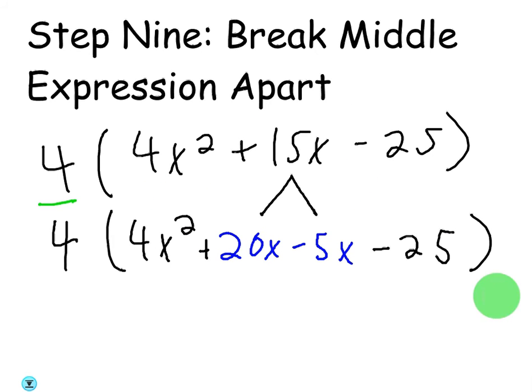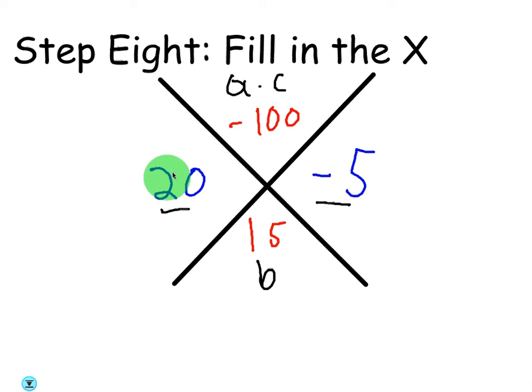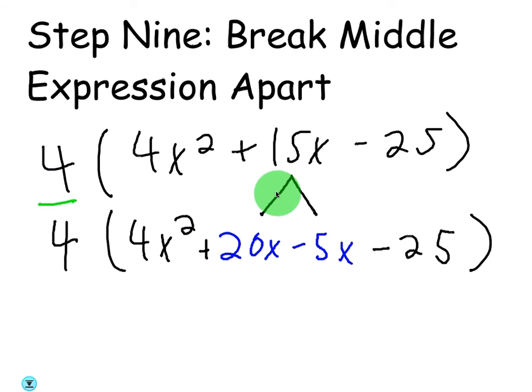All right, 20 times negative 5 is negative 100. 20 plus negative 5 is 15. So we're going to break the middle expression apart based on those two numbers we got. All right, I guess here's how you know. Can everybody see that 20x and 4x squared have a common factor in 4x? If I were to put the minus 5x first, 4 and negative 5 do not have a common factor. So try to put the term next to the first term so that they have a common number. In other words, 4 goes into both 4 and 20, but if I were to put the negative 5x there, there would be no common factor with 4 and negative 5.